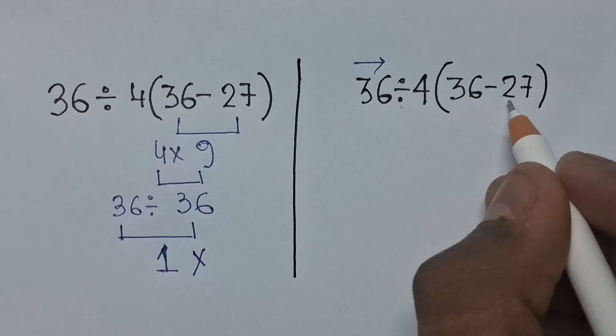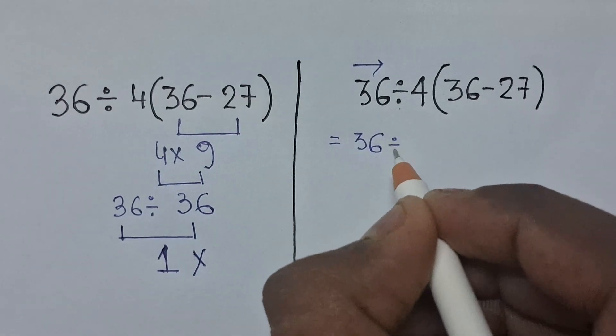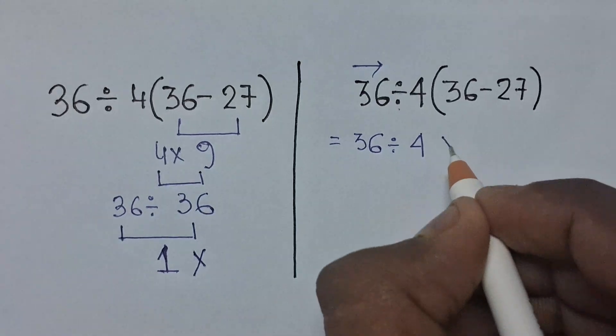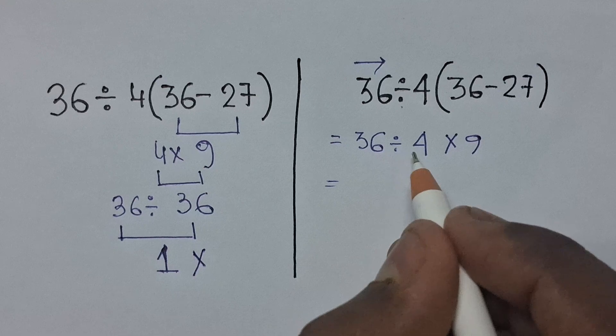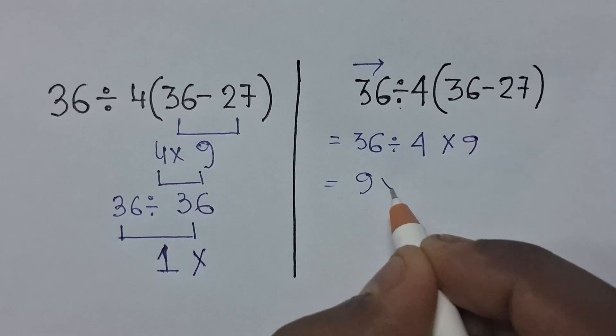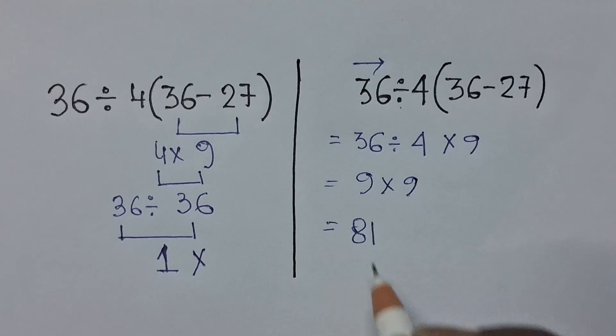Let's correctly solve it again. So 36 divided by 4 times bracket. First, 36 minus 27 is equal to 9. Now if we solve the multiplication first it is wrong, so first we have to solve the division. 36 divided by 4 equals 9, times 9, which is equal to 81.